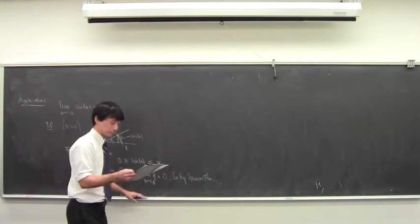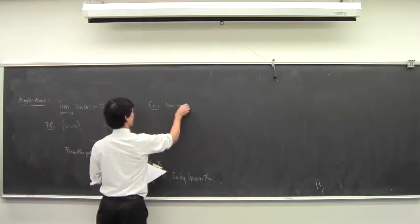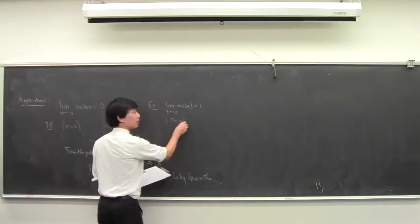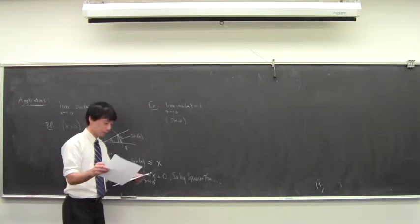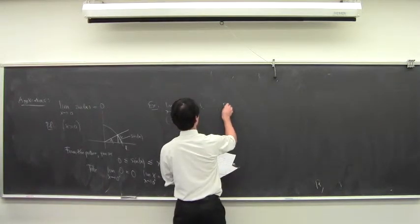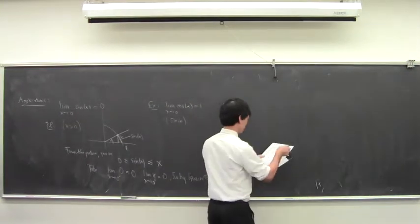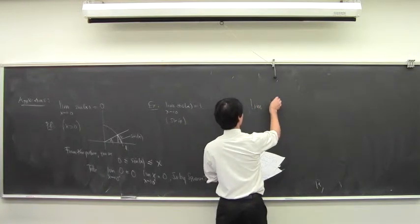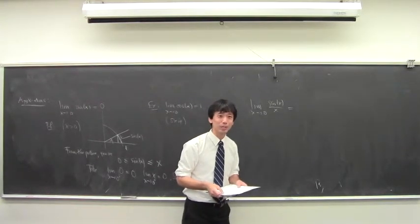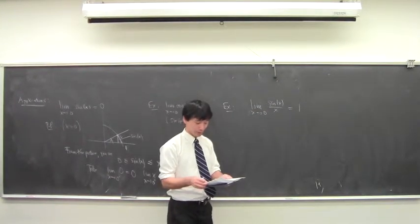One result I'm going to skip is that the limit of cosine(x) as x approaches 0 is 1. We'll just assume that. The last and more important result is: the limit of sine(x)/x as x approaches 0. Does anyone know this? It turns out to be 1.